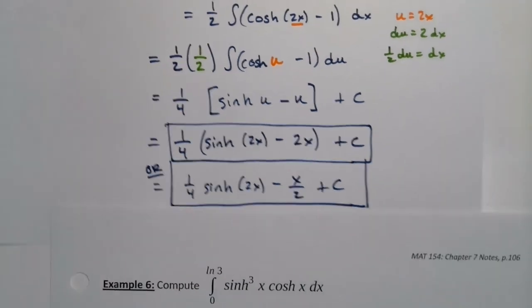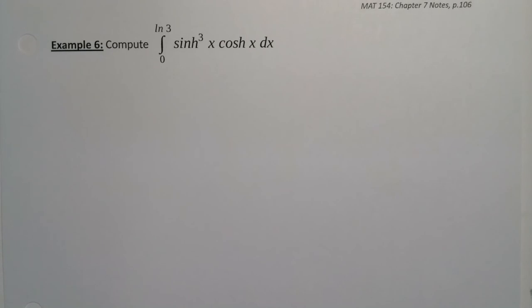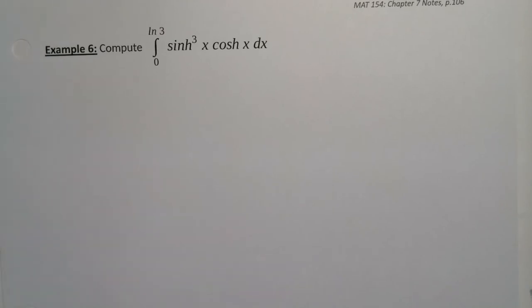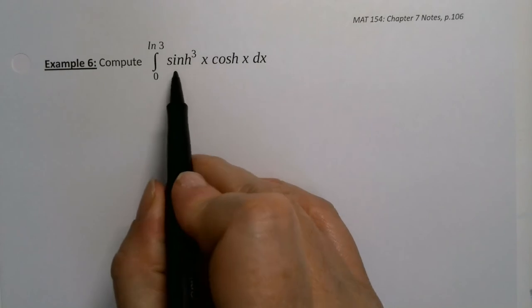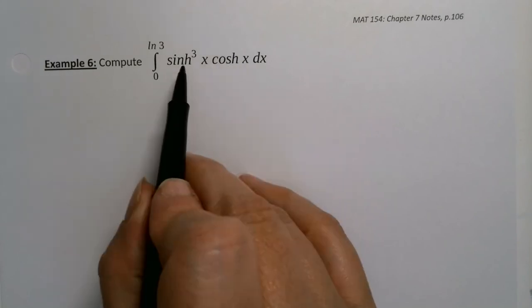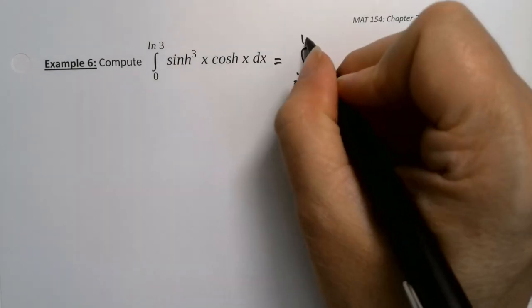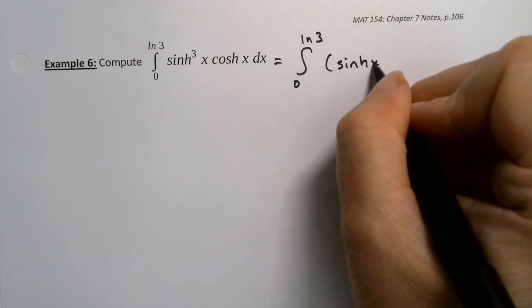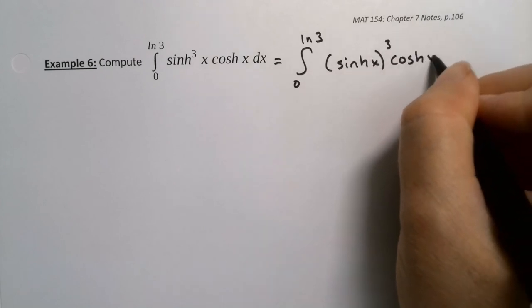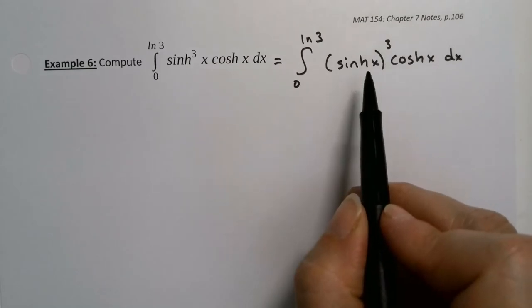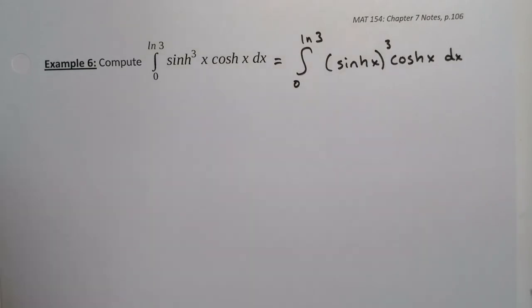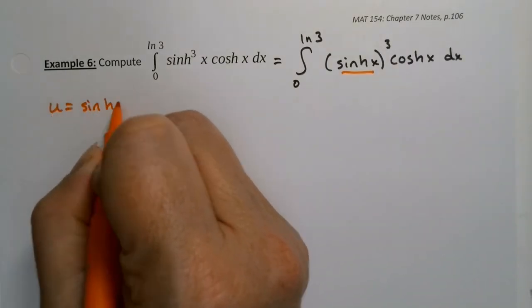Now let's kick it up a notch and do a definite integral — something that's going to involve a little more work. The actual integration won't be that difficult; it's setting up the substitution. We have ∫ from 0 to ln(3) of sinh³(x) · cosh(x) dx. The derivative of sinh is cosh, so with a function nested inside another, little bells are going off: u = sinh(x).